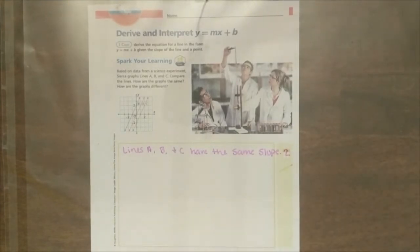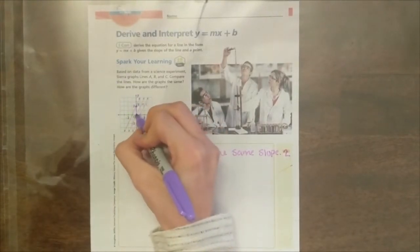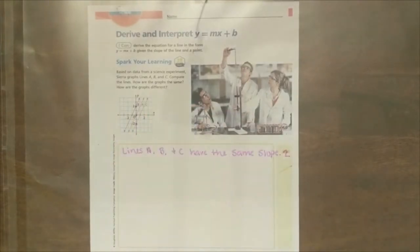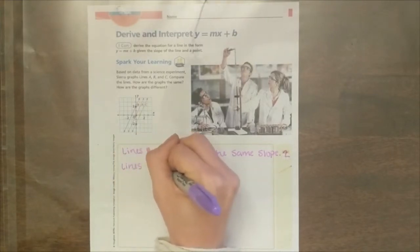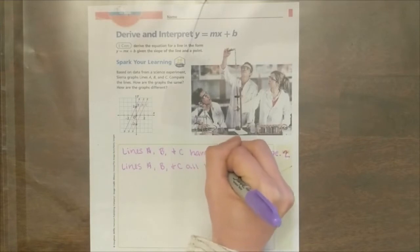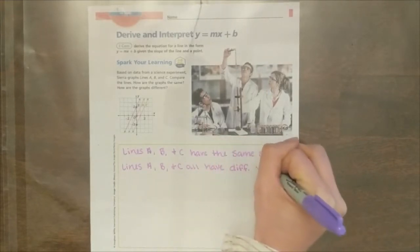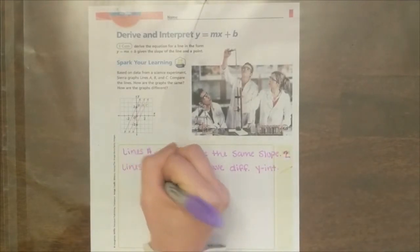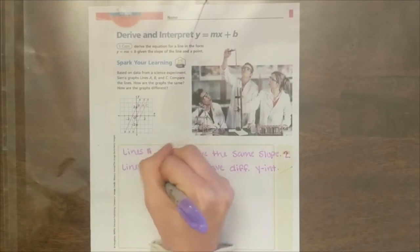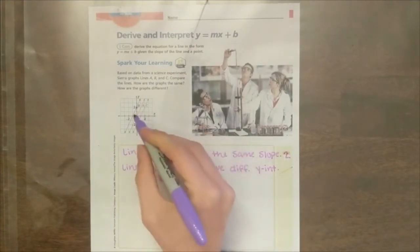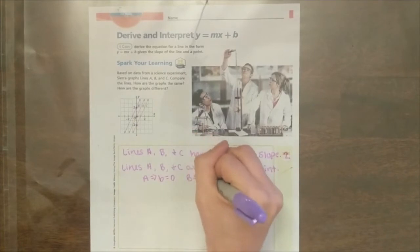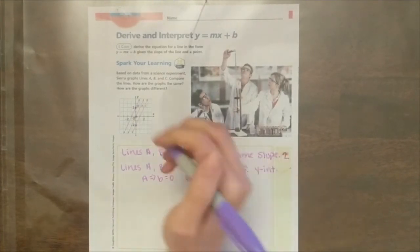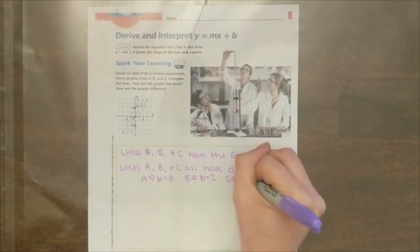Next, let's look at their y intercepts. Where do each of these three lines cross the y axis? They all three cross in different spots, so the y intercepts are what make these graphs different. So lines A, B, and C all have different y intercepts. Line A's y intercept is at 0, 0. B has a y intercept of 0, 2. And C has a y intercept of 0, negative 2. So B equals negative 2.